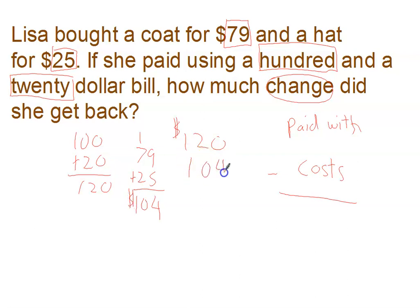So now we need to take one hundred and twenty, minus a hundred and four. You cannot do zero, minus four. You're going to come borrow from the two. It makes him a one. Ten minus four is six. One minus zero is one. And one minus one is nothing. Sixteen dollars left.